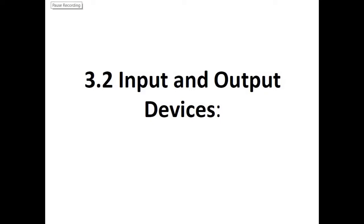Assalamu alaikum warahmatullahi wabarakatuh, welcome to another computer science lecture. Today we would be discussing section 3.2 input and output devices; if you're following the old syllabus, this is chapter number five. This section is divided into three parts: input devices, output devices, and monitor and control system. In the new syllabus, section 3.2 is split into input devices, output devices, and sensors. Let's start the lecture.